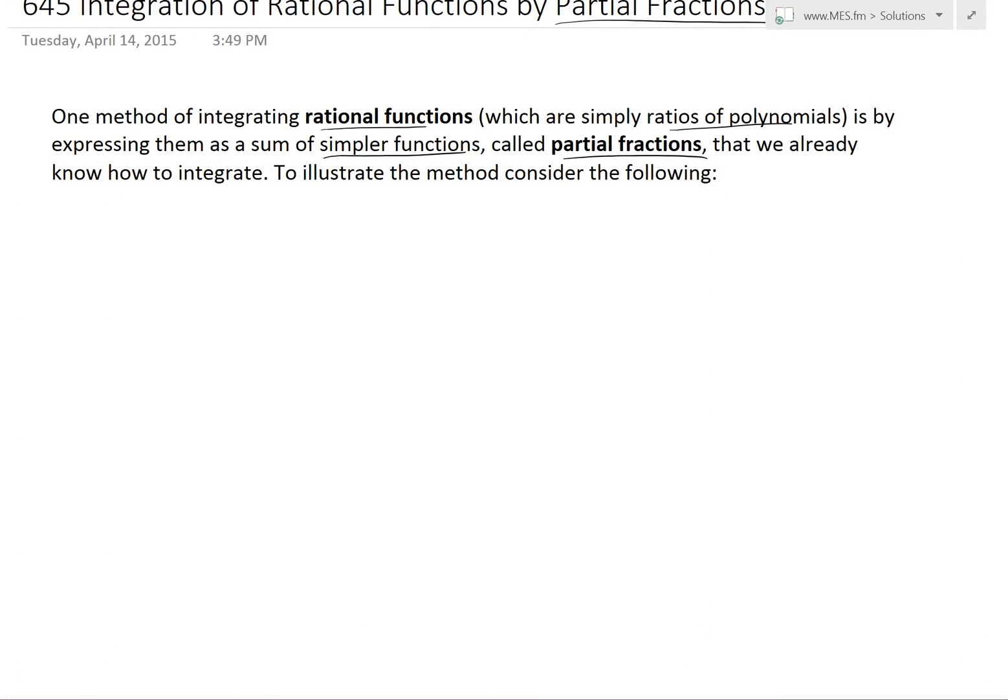To illustrate the method, consider the following. Let's write a function like this: 2 over x minus 1 minus 1 over x plus 2. So now if we were to add these up, first to add these up, we multiply by a common denominator. In this case, let's create one where it's x minus 1 times x plus 2.